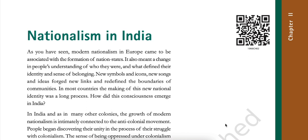As you have seen, modern nationalism in Europe came to be associated with the formation of nation-states. It also meant a change in people's understanding of who they were and what defined their identity and sense of belonging. New symbols and icons, new songs and ideas were forged, and new links redefined the boundaries of communities. In most countries, the making of this new national identity was a long process. How did this consciousness emerge in India? In India, as in many other colonies, the growth of modern nationalism is intimately connected to the anti-colonial movement.